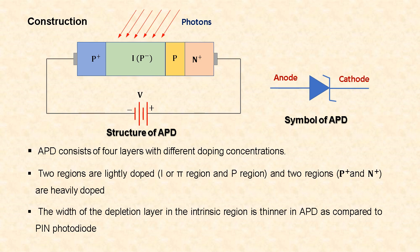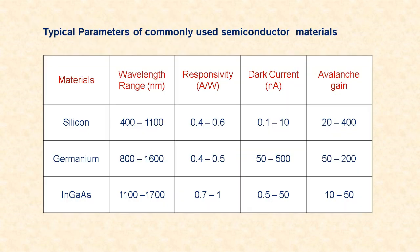The symbol of avalanche photodiode is similar to zener diode. Now let us see the typical parameters of commonly used semiconductor materials for avalanche photodiodes. For silicon: wavelength range is 400 to 1100 nm, responsivity is 0.42 to 0.6 A/W, dark current is 0.1 to 10 nanoamps, and avalanche gain is 20 to 400. For germanium: wavelength range is 1100 to 1700 nm, responsivity is 0.4 to 0.5 A/W, dark current is 50 to 500 nanoamps, and avalanche gain is 50 to 200. For indium gallium arsenide: wavelength range is 1100 to 1700 nm, responsivity is 0.7 to 1 A/W, dark current is 0.5 to 50 nanoamps, and avalanche gain is 10 to 50.